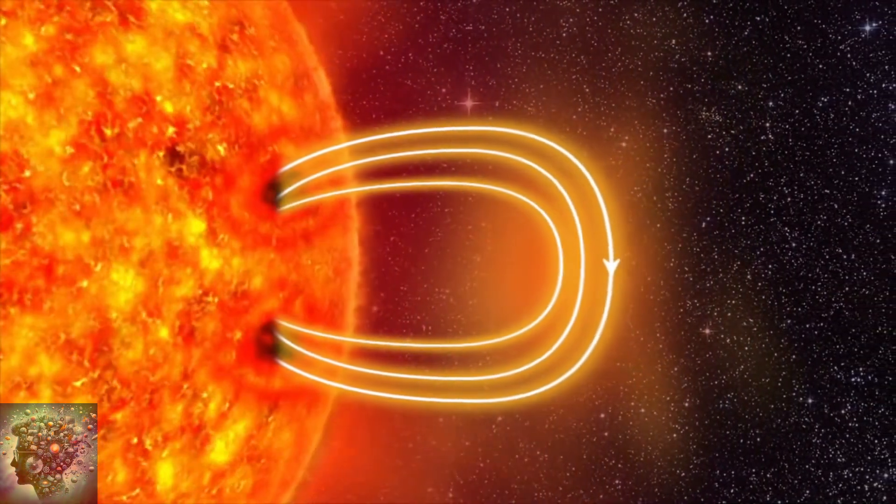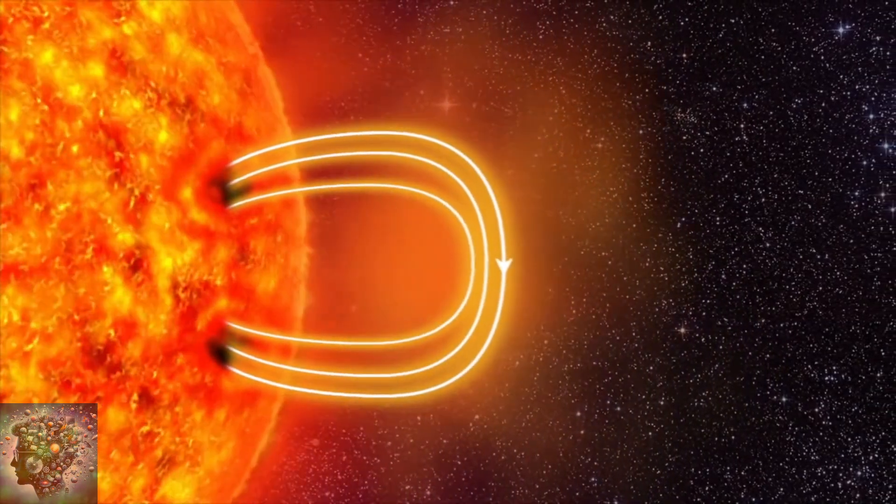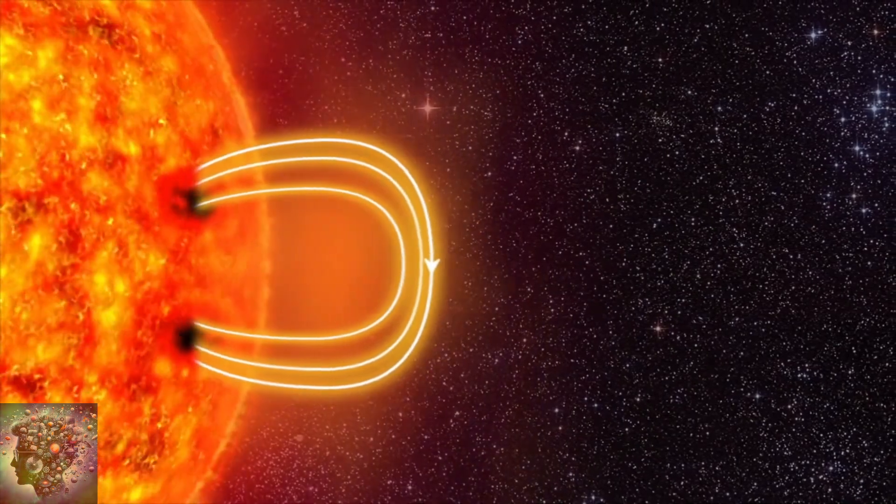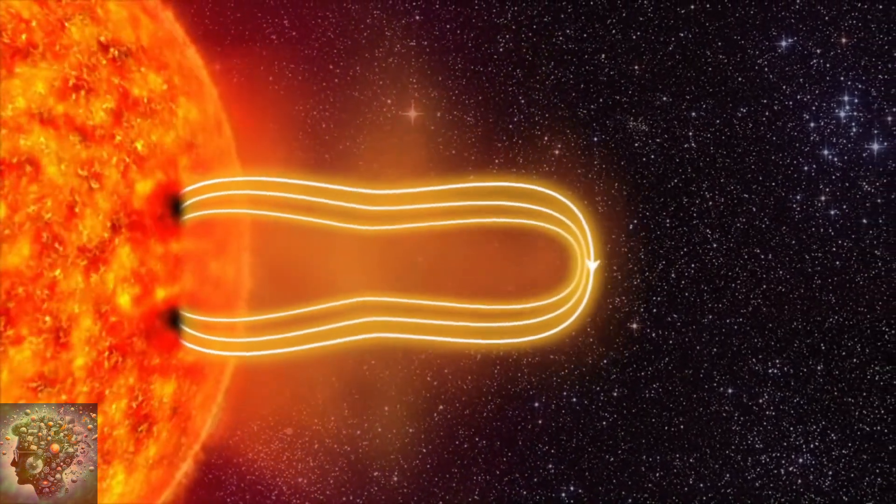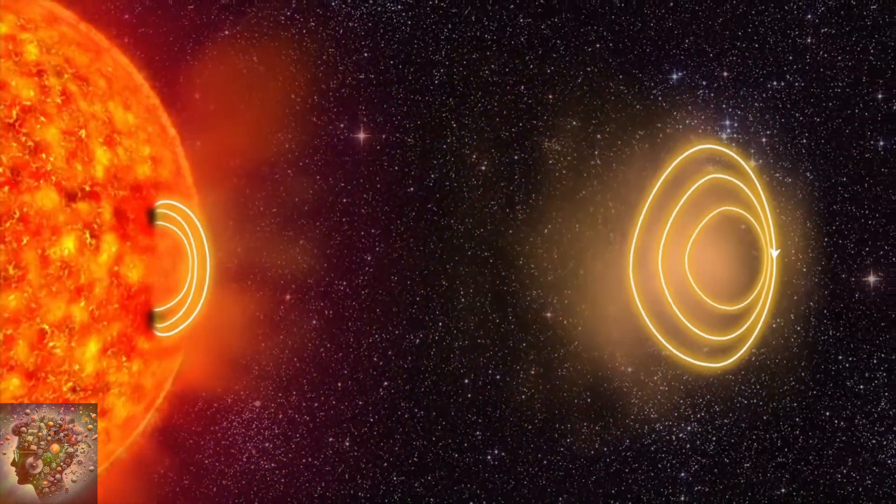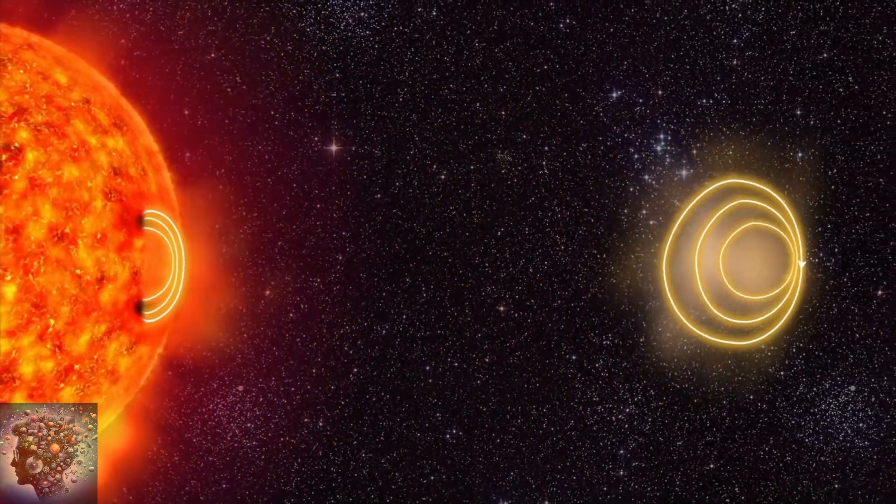During solar minimum, when sunspot activity is at its minimum, one pole is positively charged and the other negatively. Invariably, these solar polar magnetic fields begin to weaken until they reach zero, immediately starting to strengthen again with the opposite polarity in a constant cycle.